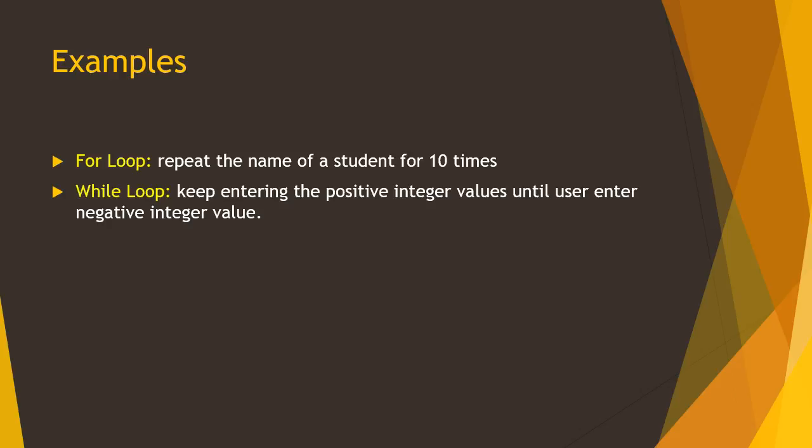Now look at the second example. Keep entering positive integer values until user enters negative integer value. In this situation we don't know after how many tries user will enter the negative integer value. Therefore, this loop is called conditional loop. So as long as the condition is true, that is the number that user is going to enter is positive, then this loop will keep going.